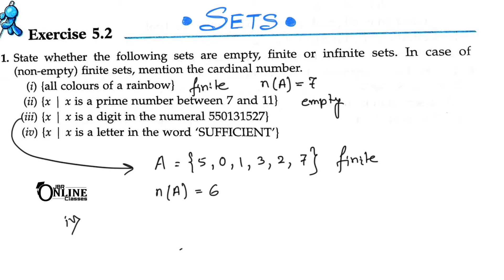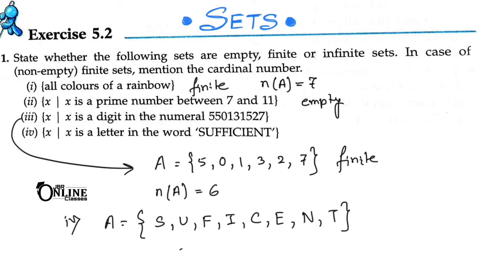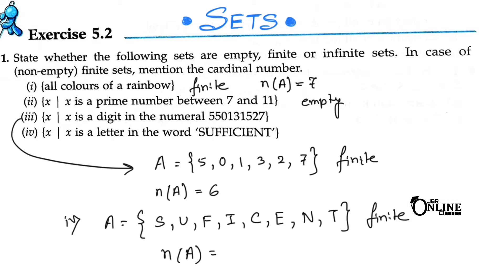Fourth one: x is a letter in the word 'sufficient'. The set A = {s, u, f, i, c, e, n, t}. This is also a finite set, and the cardinal number n(A) equals eight.